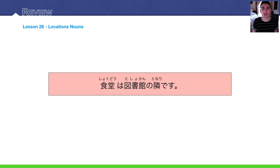Lesson 26, location nouns. In preparation for the assessment, it would be wise to memorize all the location nouns in the vocabulary part of that lesson. Let's read the key sentence here. Shokudo wa toshokan no tonari desu. Shokudo, remember, is the cafeteria, usually in a school setting, like a university campus cafeteria or a high school cafeteria.